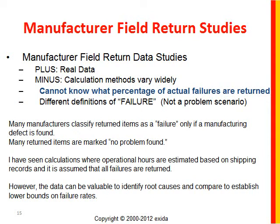Manufacturers gather warranty return information, and that can be a useful source of failure information. At Exeter, when we do a certification of an existing product, we always study the field returns to look for potential problems and make sure a manufacturer's product is sufficiently safe for a given SIL level. So we get to see a lot of manufacturer field return studies and use them for comparison and verification purposes. However, most manufacturers — including myself when I was taught how to do this — mark many problems as 'no problem found.' So you really have to be careful about the absolute failure rates, but this data can be valuable to identify root causes and compare.